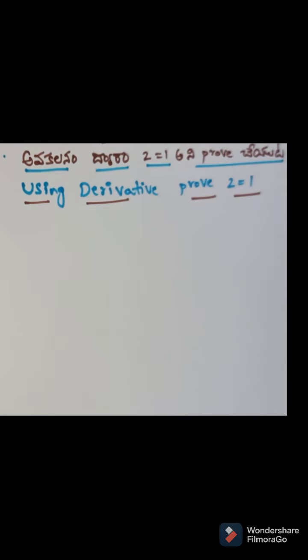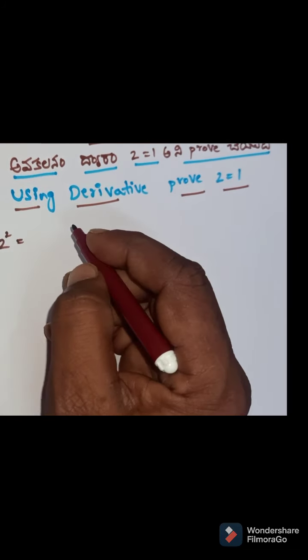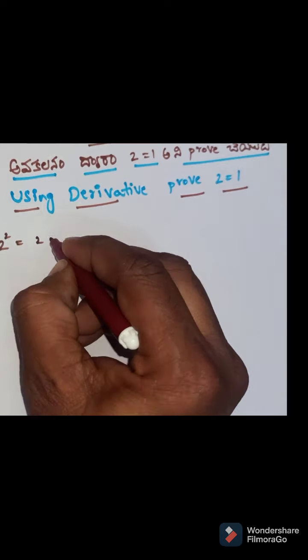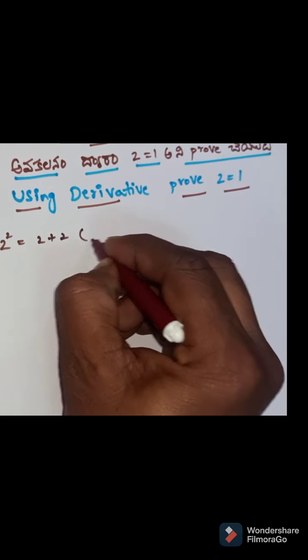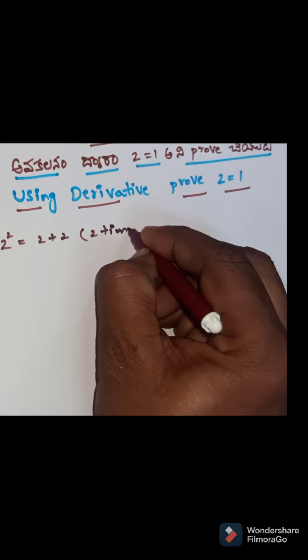Now, 2 squared is equal to 4. 2 plus 2 means 2 times add.